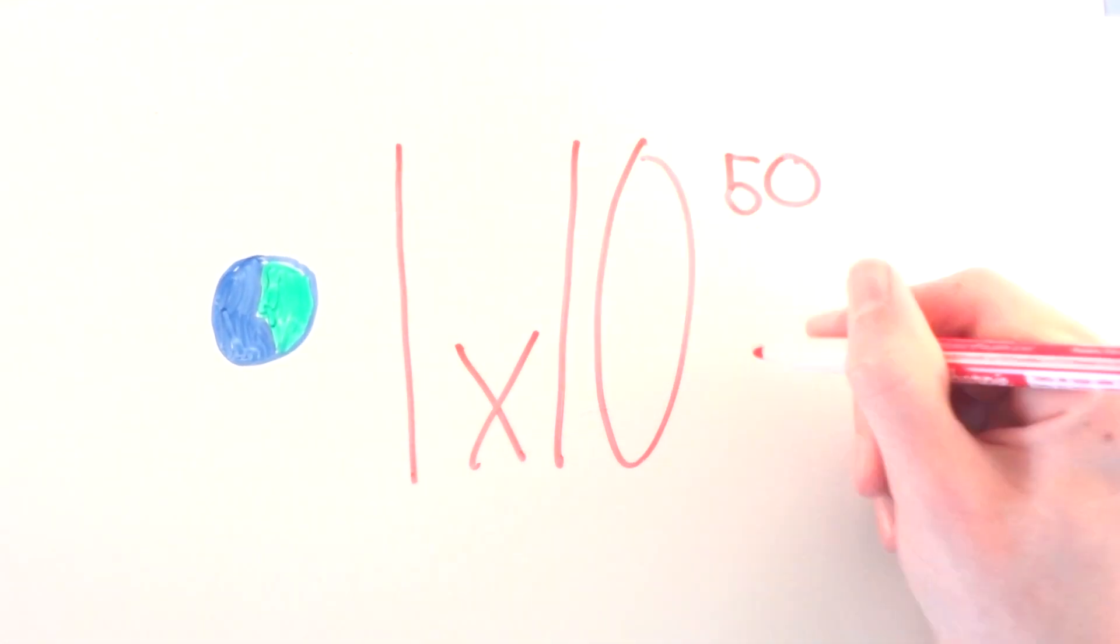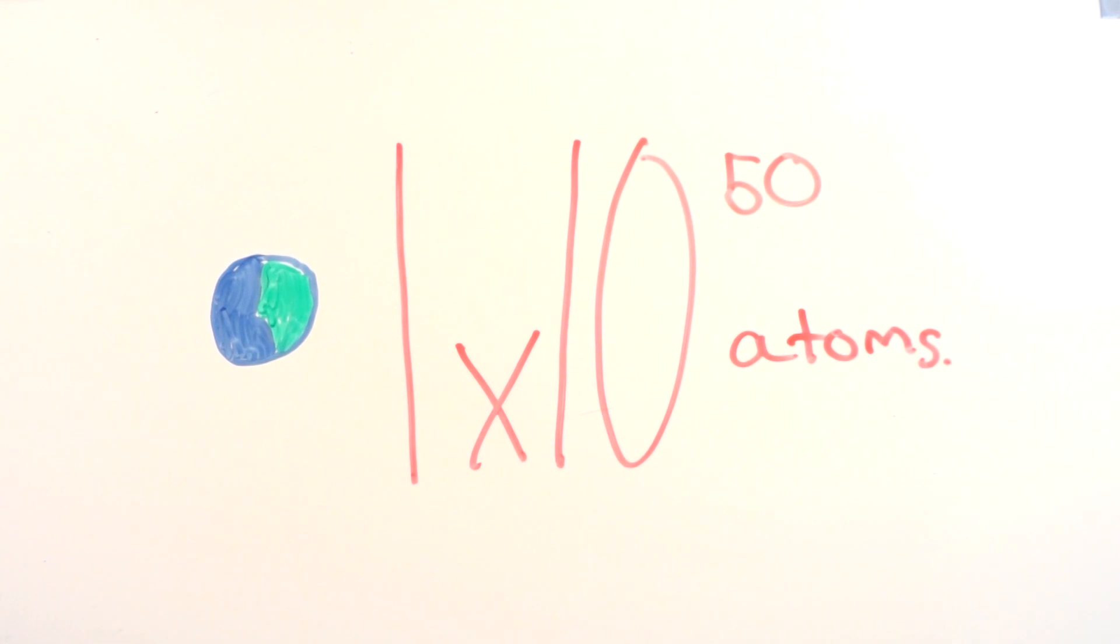So how about Earth? How many atoms are there here on Earth? The number is still massive. That's estimated to be 1 times 10 to the power of 50 atoms on Earth. Try and imagine that many atoms, or even that many zeros.